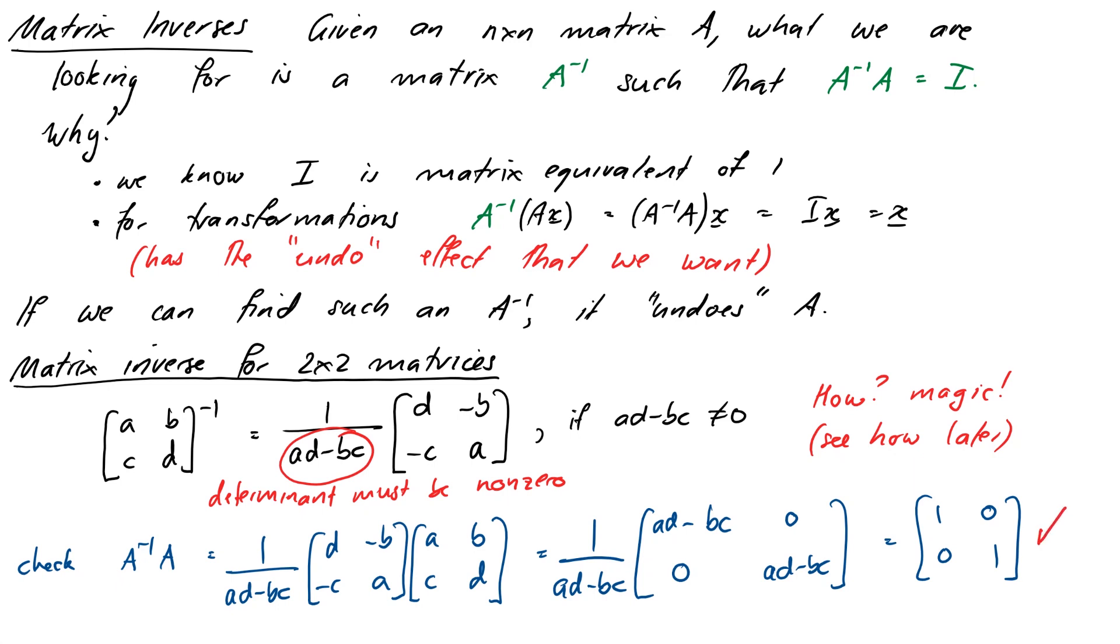Okay so supposing we can find such an inverse what can we do with it? Well firstly we can use it to solve a system of linear equations. So consider the equation A times X is equal to B.